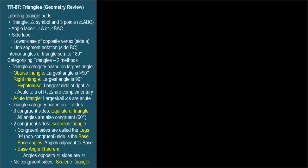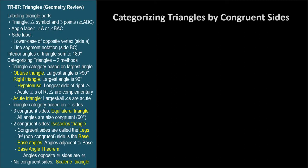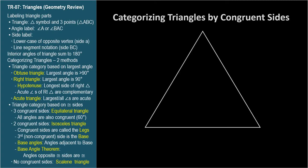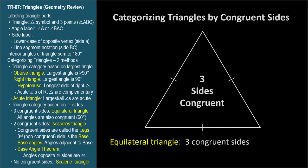The second way to categorize triangles is by the number of congruent sides. When all three sides of a triangle are congruent, it's an equilateral triangle. It could just as easily have been called an equiangular triangle because all the angles are also congruent. Since they must sum to 180 degrees, each angle in an equilateral triangle is 60 degrees. This means all equilateral triangles are similar to each other because their angles are always the same. We'll review similar and congruent triangles in the next video, TR-08.